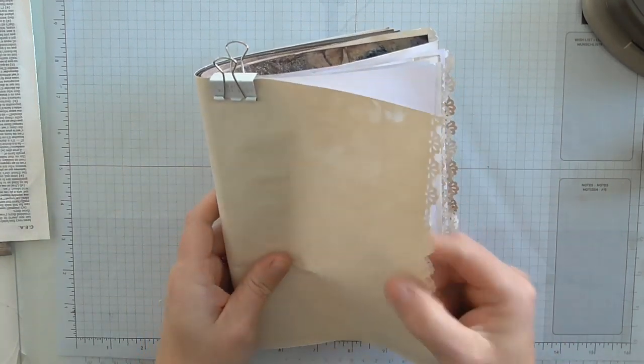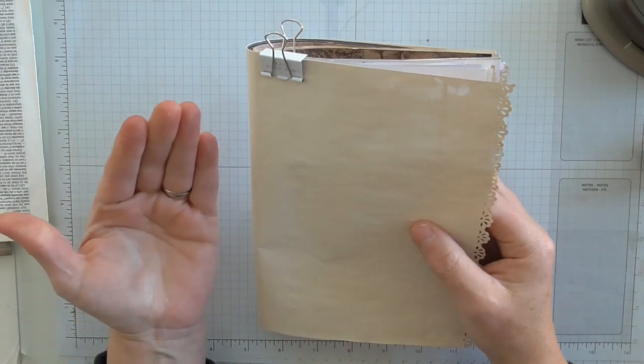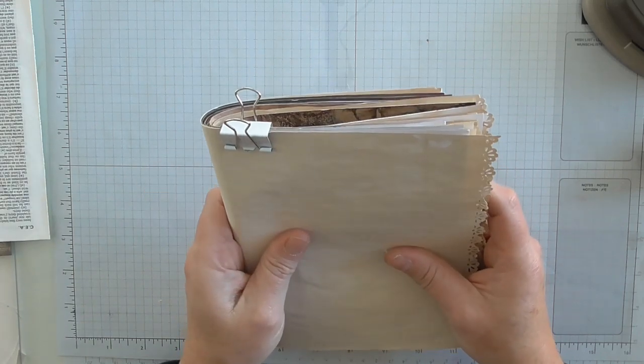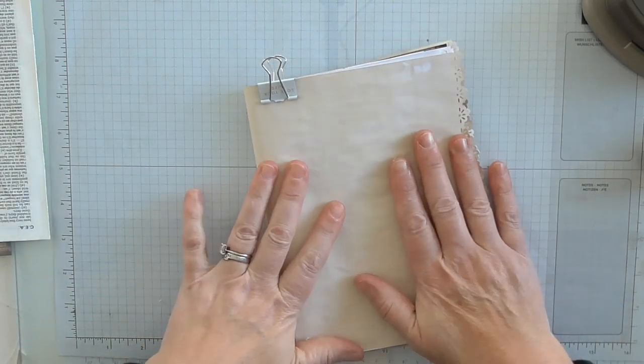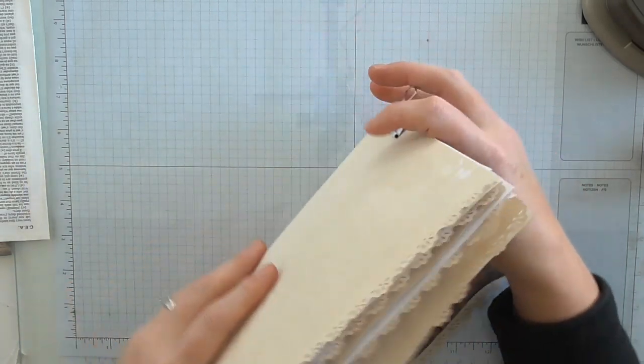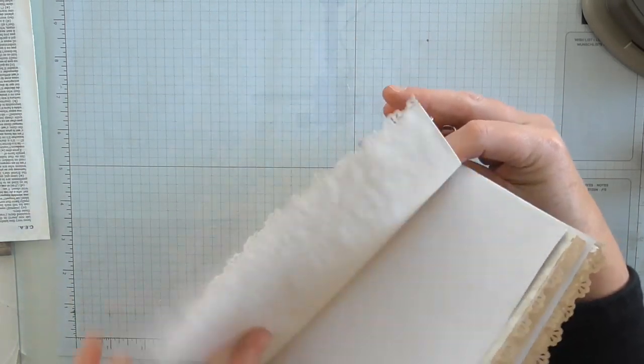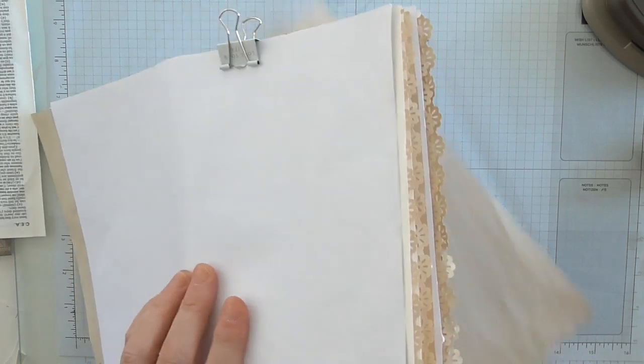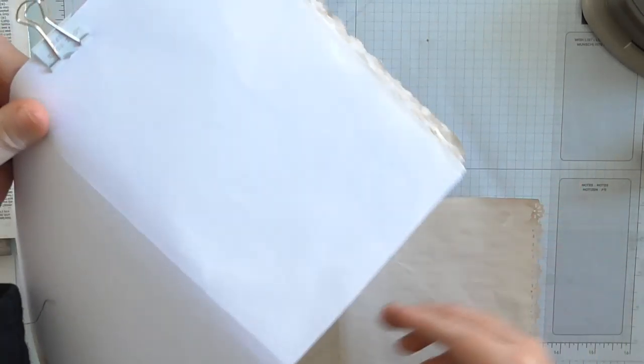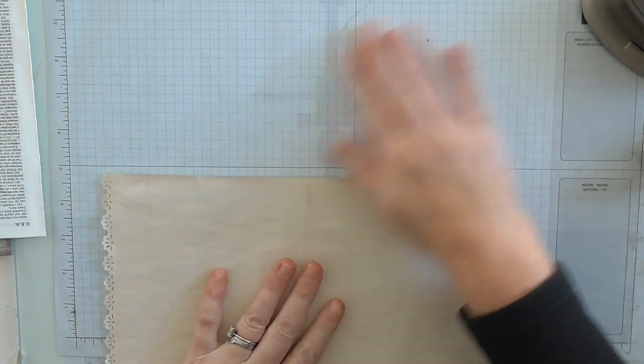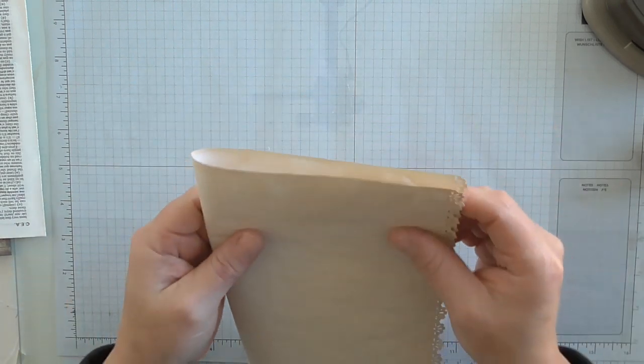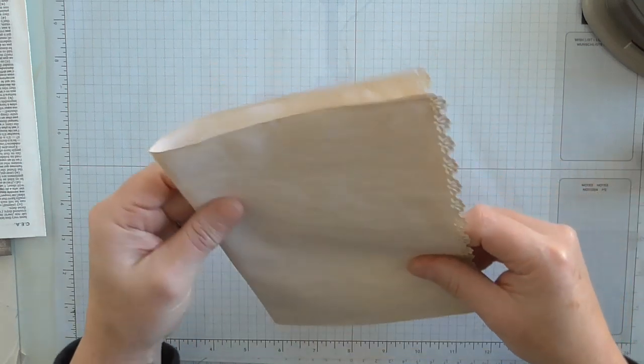So that means that this is going to be my first page. I'm going to have my cover here. But this is going to be my first page. So what I tend to do is I'll take it out of my bundle and I'll clip the rest together and I'll work one page at a time. Now this is one sheet or four pages. So I'm going to decorate this whole sheet all in one go.